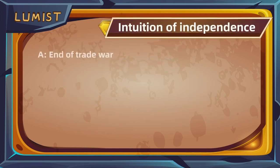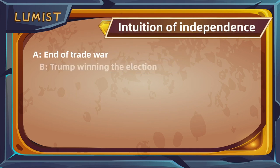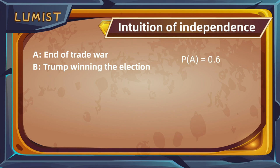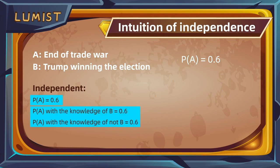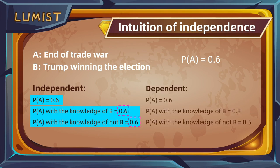For example, if we define event A as the current trade war ending and event B as the outcome of the upcoming presidential election, and say P(A) is generally 0.6, if A and B are independent, that means the trade war has the same chances of ending regardless of who wins the election. Knowing the outcome of the election does not affect our conception of the likelihood of the trade war ending. On the other hand, if these events are dependent, then depending on whether B happens or not, we would have different predictions about the probability of A.